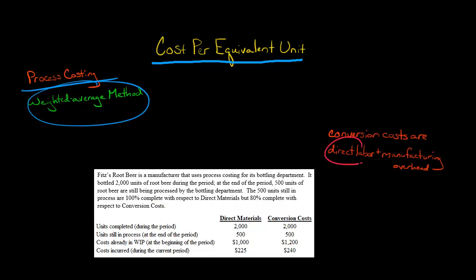By the way, if you don't know what conversion costs are, it's just direct labor plus manufacturing overhead. So how might it be that these 500 units are 100% done with direct materials, but only 80% with conversion costs?